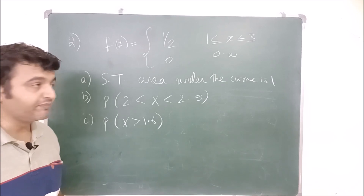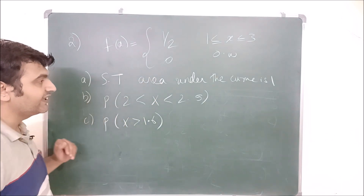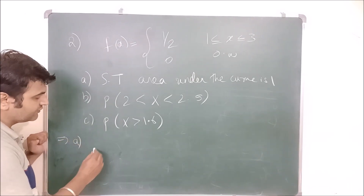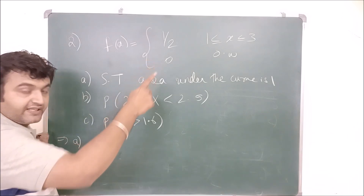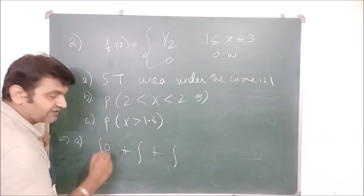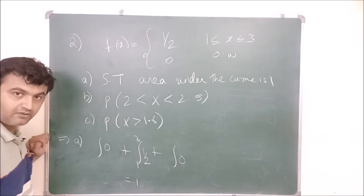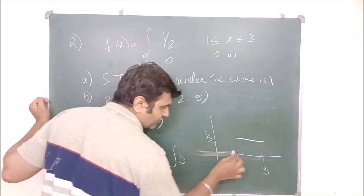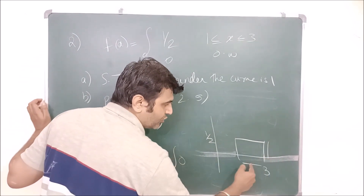Now let's go to the second example. A PDF is given: from one to three it takes the constant value one-half, and zero otherwise. You have to show that the area under the curve is one. You can do this by calculation: take the integral from minus infinity to infinity of F(x) dx, split at one and three — minus infinity to one plus one to three plus three to infinity. The function is zero outside one to three, and one-half inside. So the integral from one to three of one-half dx equals one-half times two equals one. Graphically, the area of the rectangle is length times breadth = 2 × 1/2 = 1.